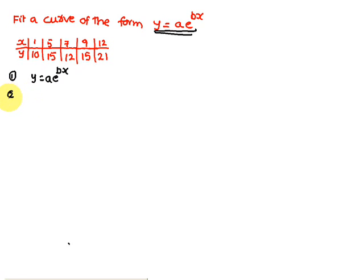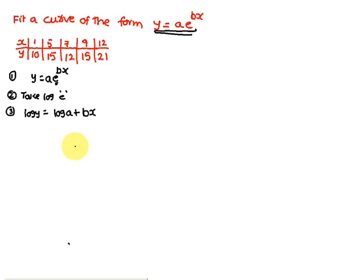Take logarithms both sides for base e, because it contains the term e. Therefore what happens is: log y = log a + bx·log_e(e) = log a + bx. So if you observe this equation — log y, log a, bx — it is nothing but in the form of a straight line model.